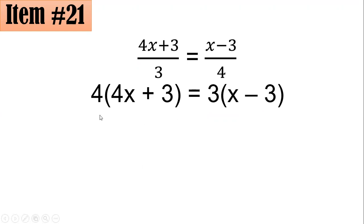By the distributive property, 4 times 4x will be 16x plus 4 times 3, which is 12, equals 3 times x, which is 3x, and 3 times negative 3, which is negative 9.